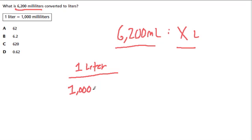And again, even though this is a basic problem, I think setting up some kind of proportion can prevent you from choosing the incorrect answer here. So if 1 liter gives us 1,000 milliliters, we want to know how many liters do we get when we have 6,200 milliliters.